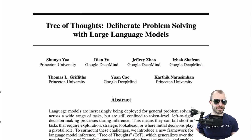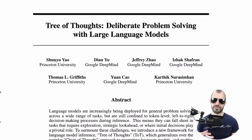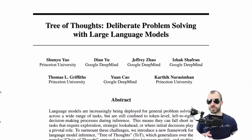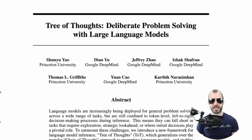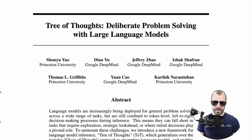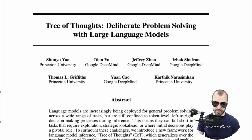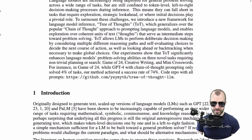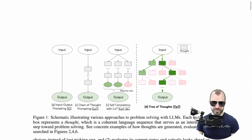I think it's a small step into a new direction where we mix language models with programming and algorithms. I'm pretty excited for that, and this paper is a step in that direction. It's by people from Princeton University and Google DeepMind, and we'll go right into it.